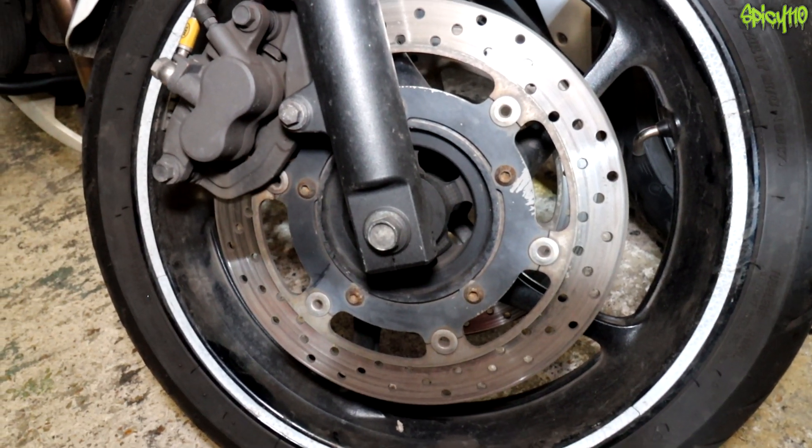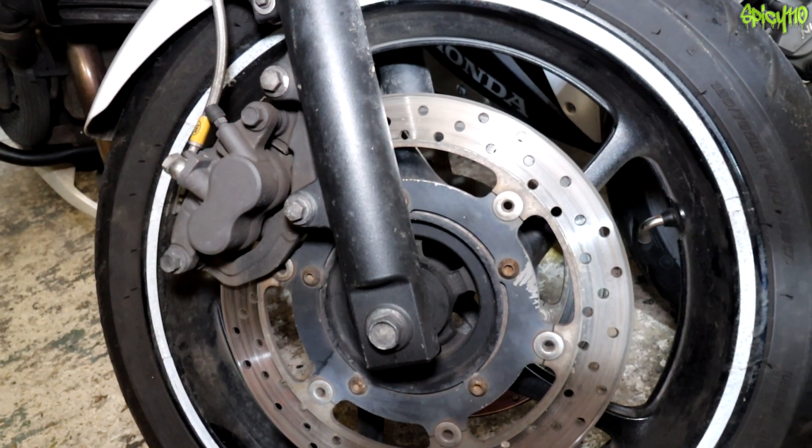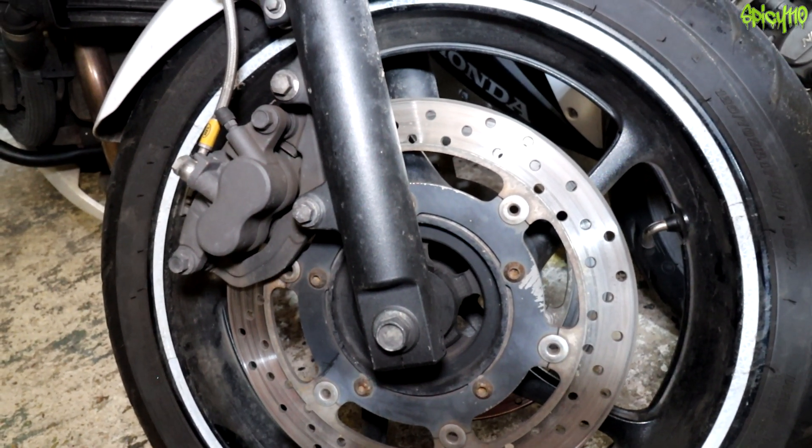On a non-ABS bike like this, if I pull that brake lever too hard, the front wheel will lock, and that's where ABS comes in, anti-lock brakes.